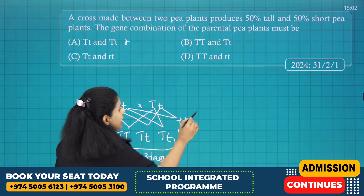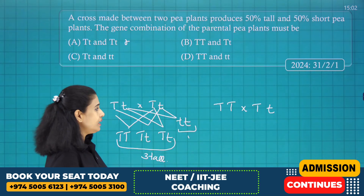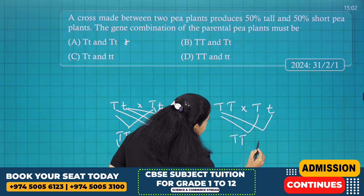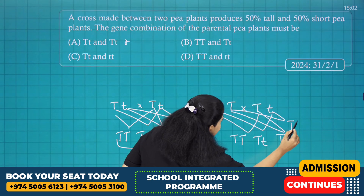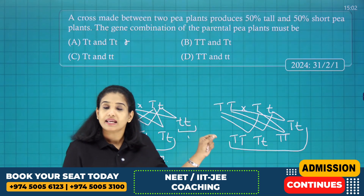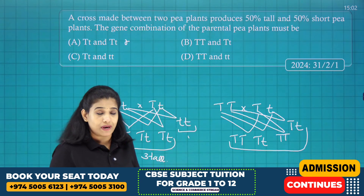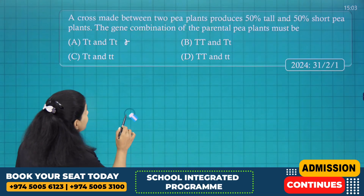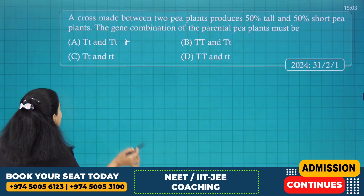Option B: TT × Tt. Doing this cross gives TT, Tt, TT, Tt — we get all tall plants because capital T is the dominant allele. So here we get all tall plants. But the offspring required are 50% tall and 50% short, so option B is also wrong.